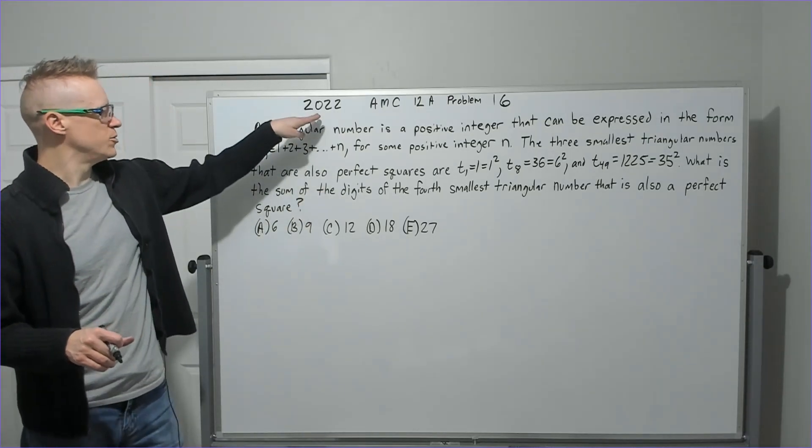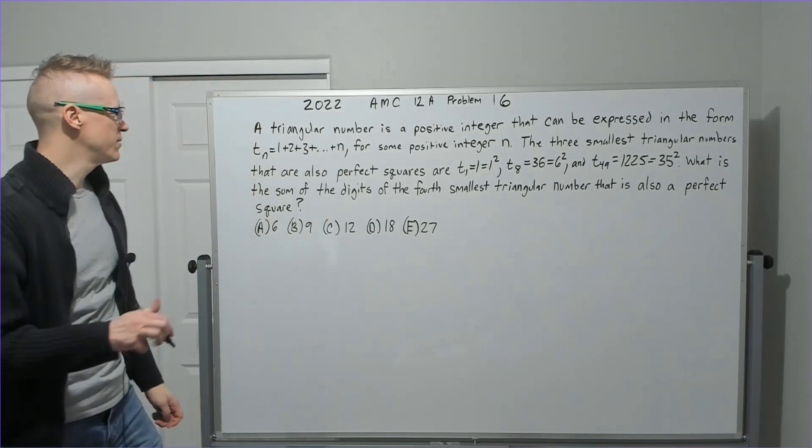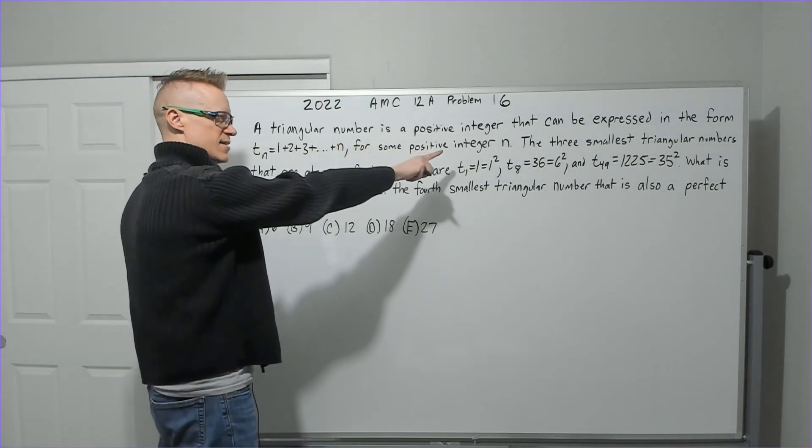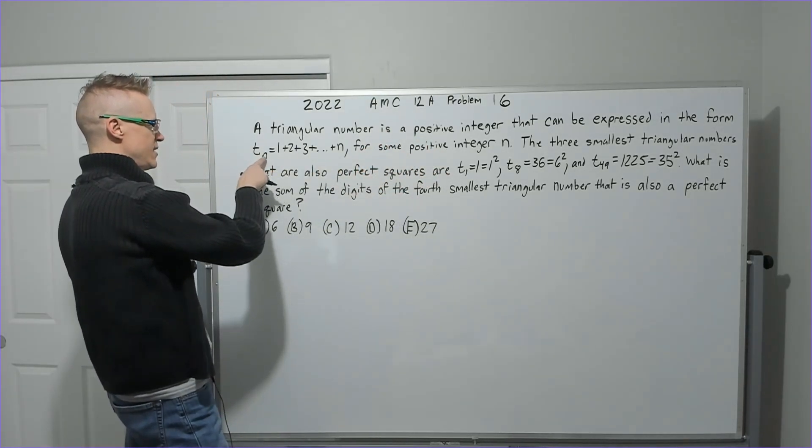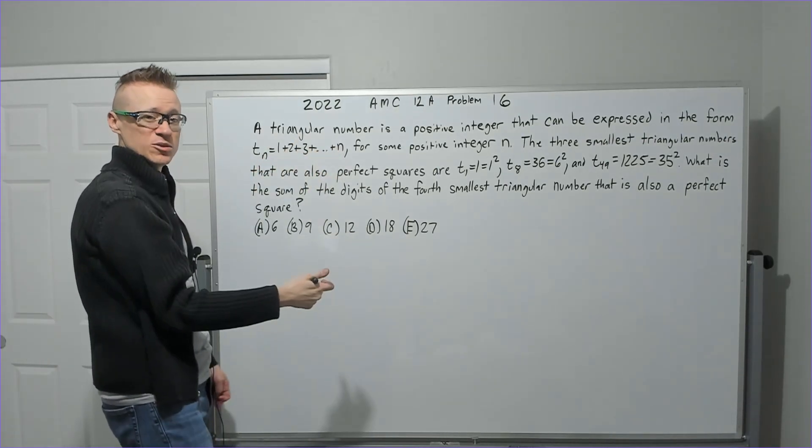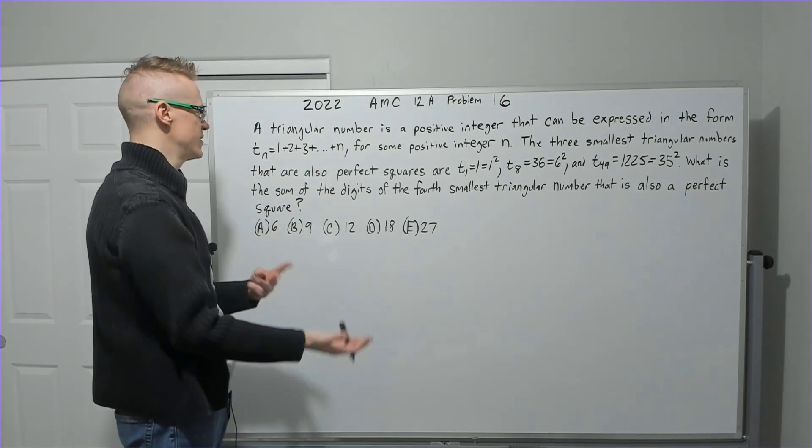Okay, let's do this. 2022 AMC 12A Problem 16. A triangular number is a positive integer that can be expressed in the form T_n equals 1 plus 2 plus 3 plus all the way to n, basically the sum of an arithmetic series from 1 to n.